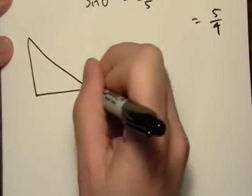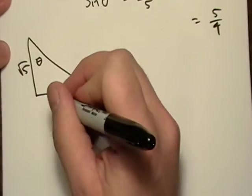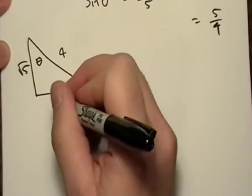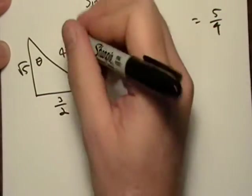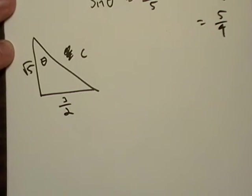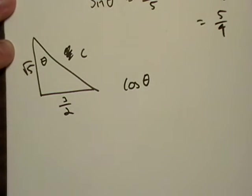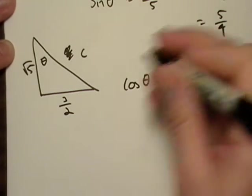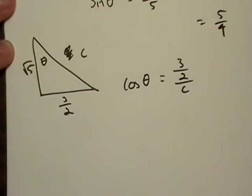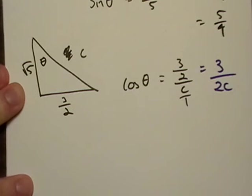Here's another triangle — let's do this again. So what's the cosine of theta? That's adjacent over hypotenuse. My adjacent side is three-halves and my hypotenuse is C, so it's going to be three-halves over C. Remember, C is just C over one, so that simplifies down to three over two-C.